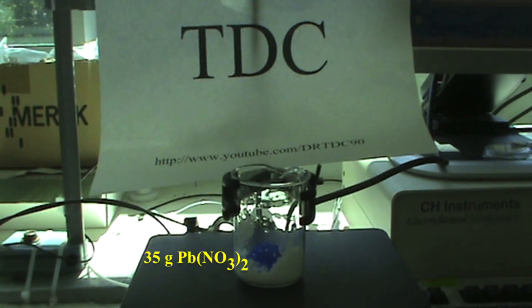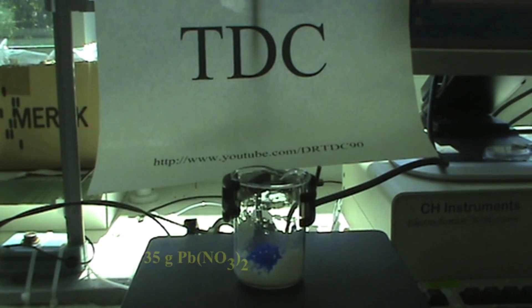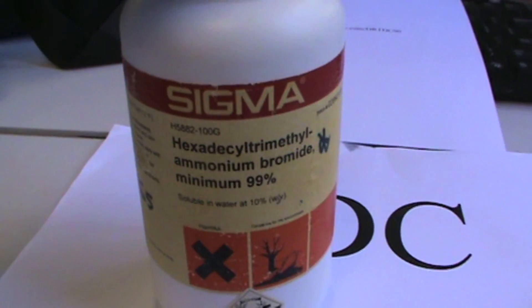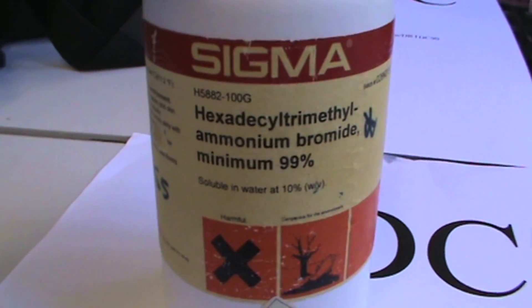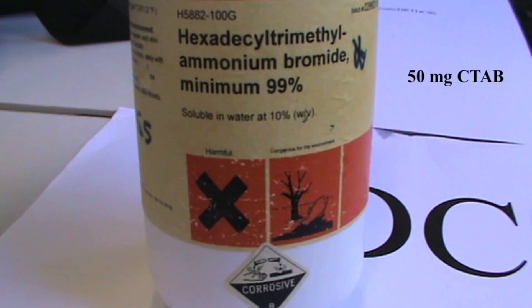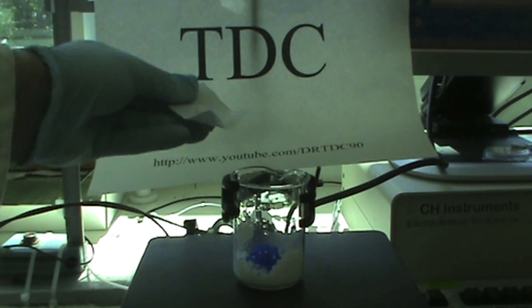To start, measure out 35 grams of lead nitrate and 2.5 grams of copper nitrate. Next, we will be adding the surfactant. Measure out 50 milligrams of CTAB and add the chemicals together into a 100ml beaker.